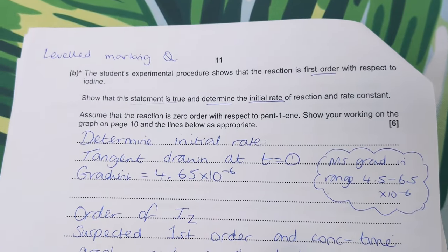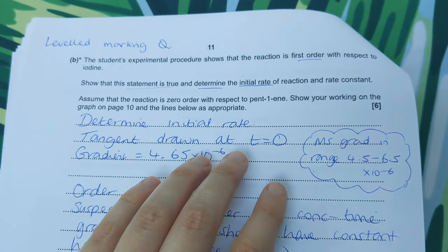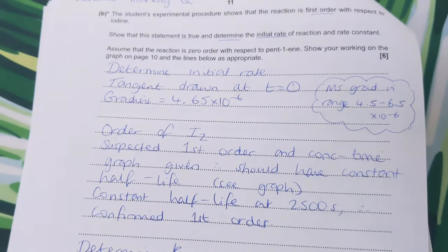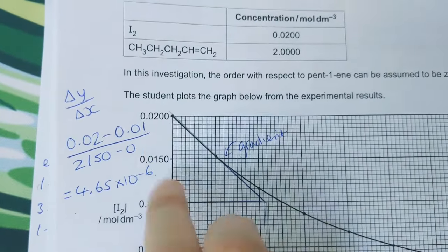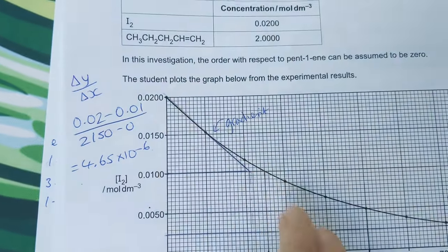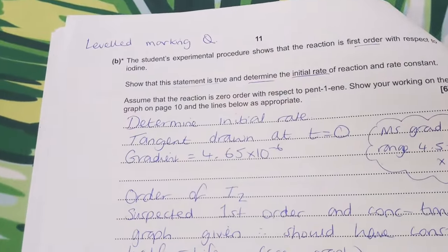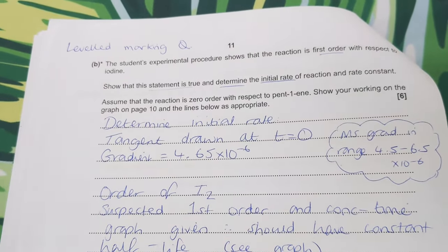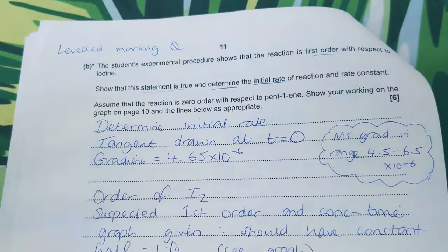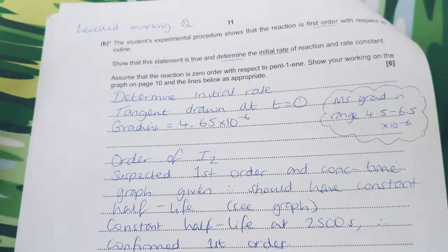Part B: the student's procedure shows the reaction is first order with respect to iodine. We need to show this is true, find the initial rate, and find the rate constant. For the first step, we find the initial rate by lining up a ruler with the first two points on the graph and drawing a tangent. Then we work out the gradient — that equals the initial rate. This is a levelled marking question with bands of five to six marks, three to four marks, or two and below.